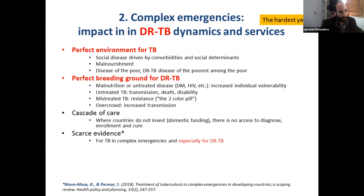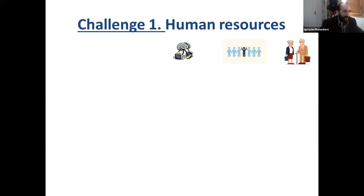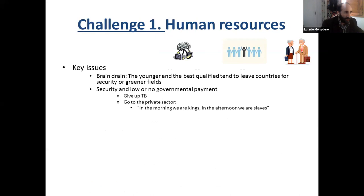This is why we were trying to get this study done, or at least grasp experiences to set priorities. Guidelines are developed for people managing cases under stable circumstances or acceptable resources. In complex emergencies, people cannot follow the guidelines — they do what they can, sometimes for good and sometimes for bad. The first challenge is human resources. The key issue is a brain drain: the younger and best-qualified, the brightest, just leave the country for security or family reasons.